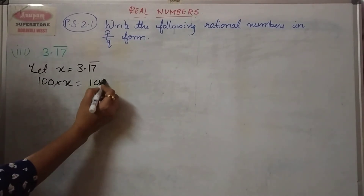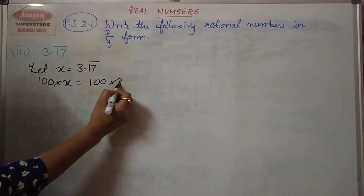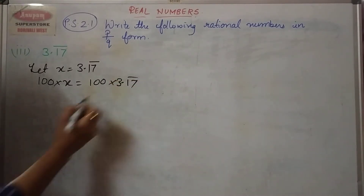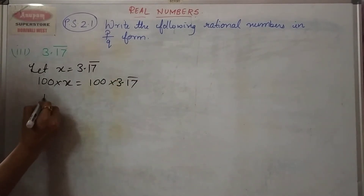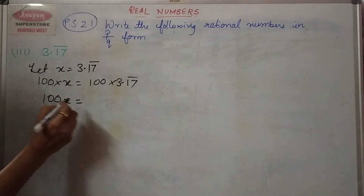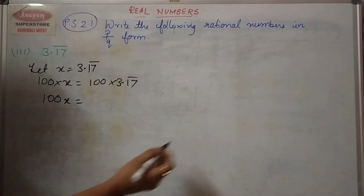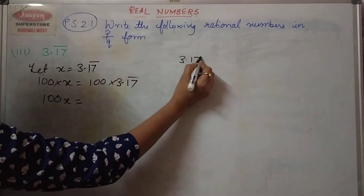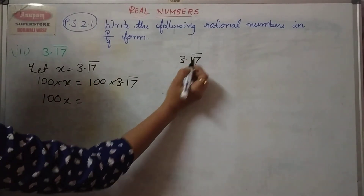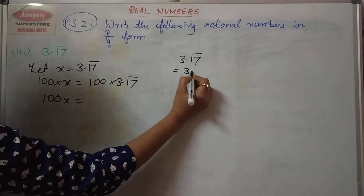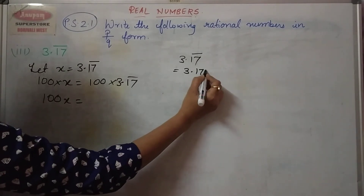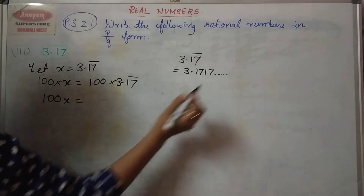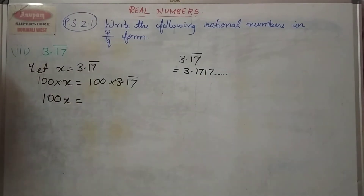So 100 into 3.17 bar. 100 into x will give me 100x. Now, 3.17 bar means 3.1717 and so on — am I correct? Yes.